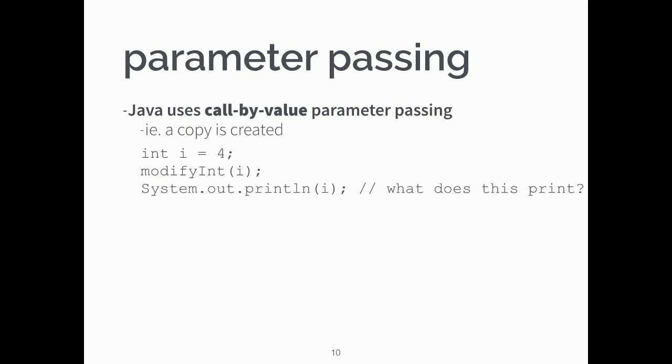We talked about parameter passing. Java uses call-by-value parameter passing, which means a copy is created. If I declare and initialize an integer i, send it into a function called 'modify an integer,' and then print it out — do I expect to print out 4 or something else? The answer is 4. The method copies the value stored in i — because i is just a basic primitive type, it copies the value 4 and modifies that copy, leaving the original unchanged.